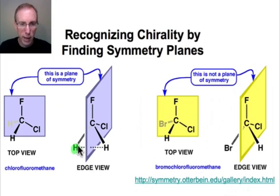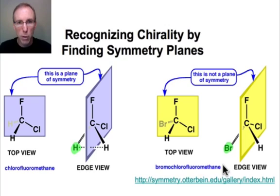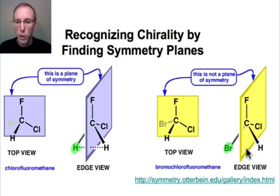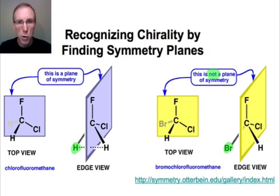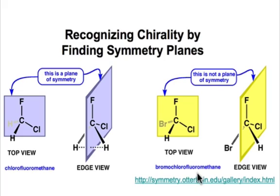If I replace one of the hydrogen atoms in the achiral molecule chlorofluoromethane with a bromine, the molecule becomes chiral because the mirror plane that was present in chlorofluoromethane has vanished. You can see that the bromine and the hydrogen are not related across the plane shown in yellow — that plane is not a plane of symmetry for this molecule. Therefore, bromochloromethane, which has no plane of symmetry whatsoever, is a chiral molecule. The absence of a mirror plane makes it chiral; the presence of a mirror plane makes it achiral.